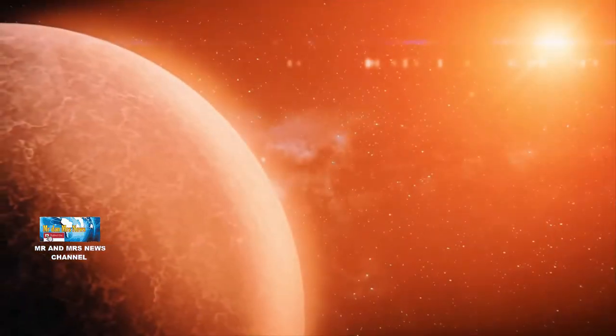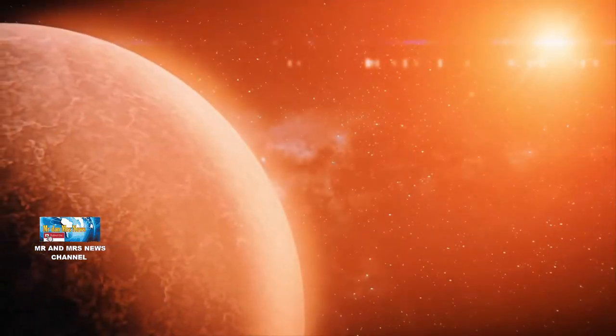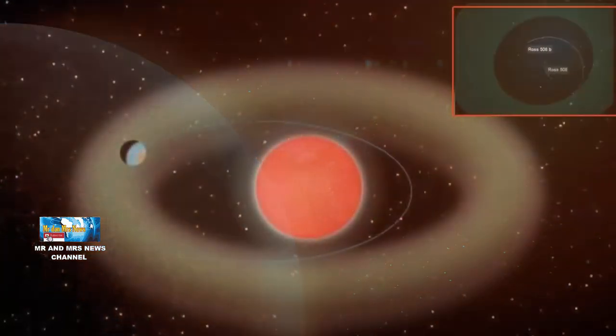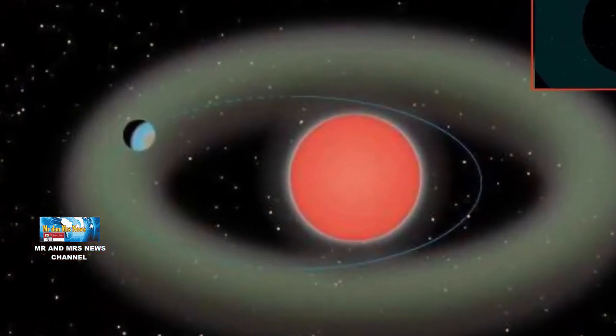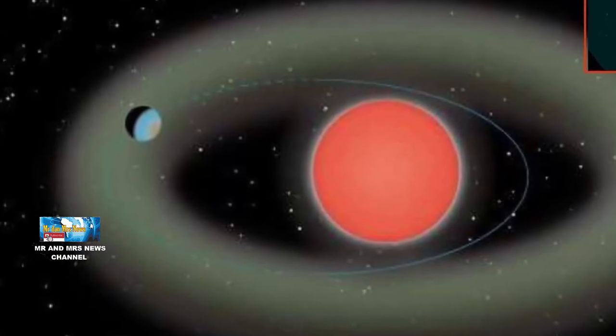ROS-508D mengorbitnya setiap 10,8 hari. Selain itu, ROS-508D sangat redup sehingga Super Earth mengalami 1,4 kali radiasi matahari yang disaksikan bumi.